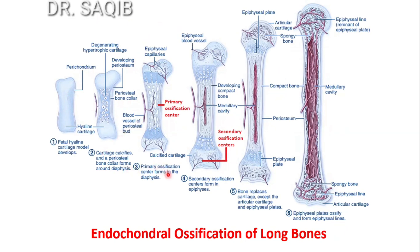What happens here is that first of all the primary ossification center appears in the diaphysis, which is also called as the shaft, and the secondary ossification centers appear in the ends, also known as the epiphysis. Here you could see this is the epiphysis and these are the secondary ossification centers in the epiphysis.